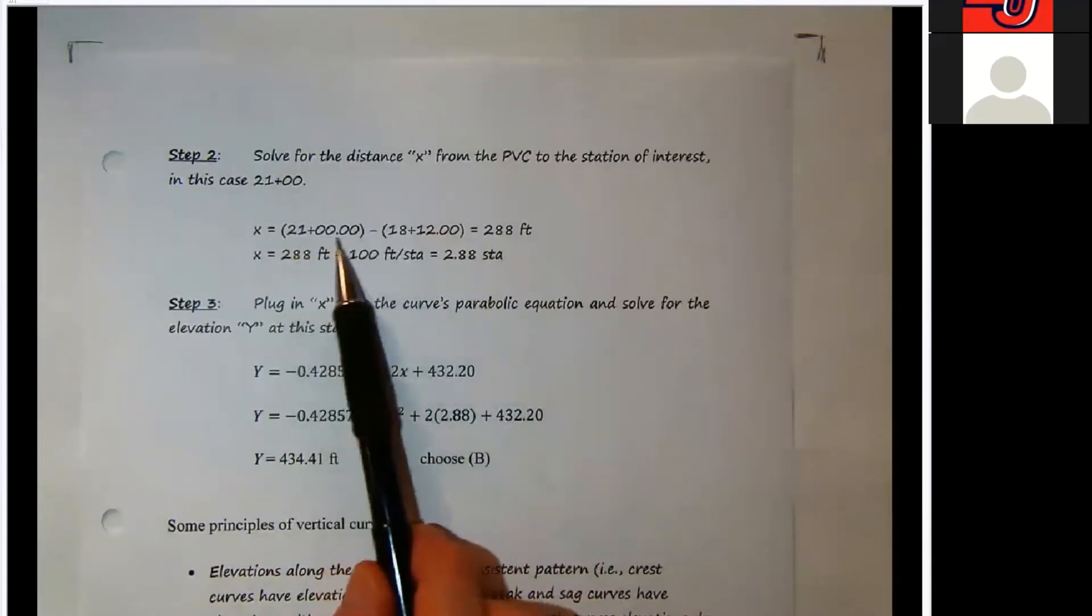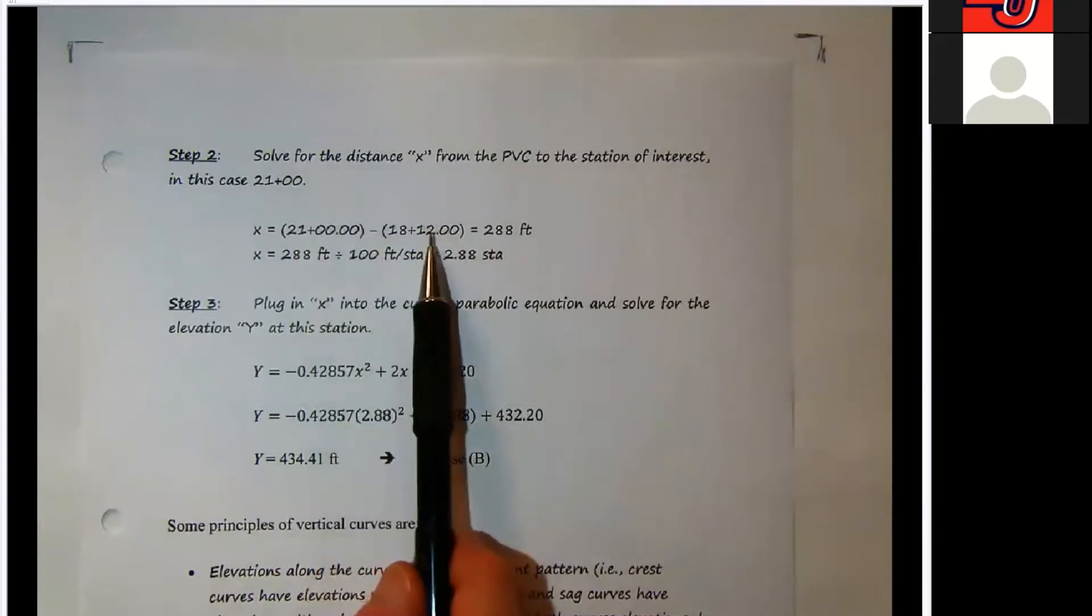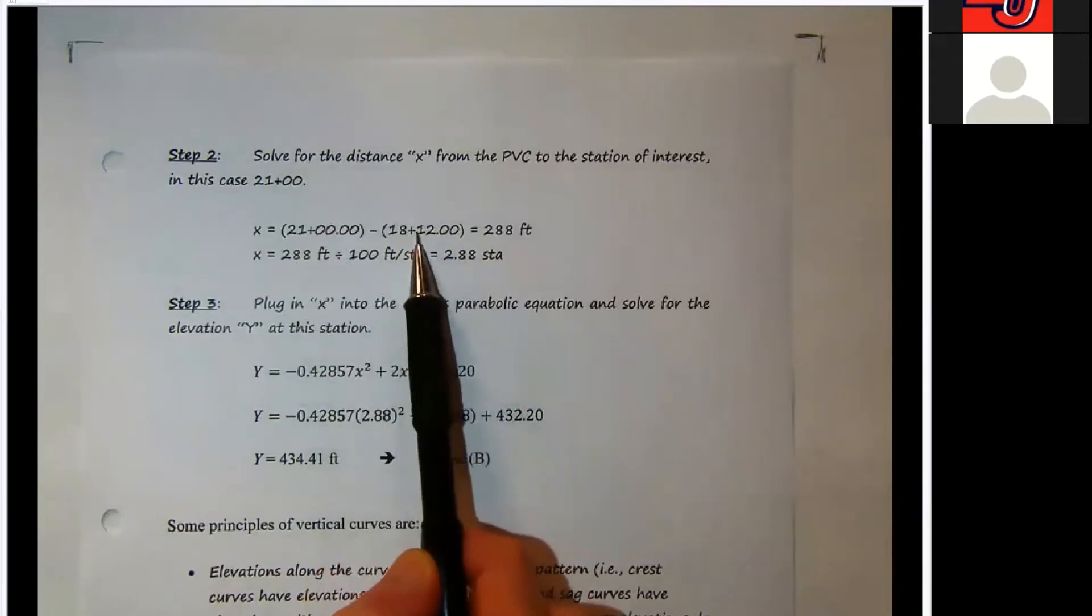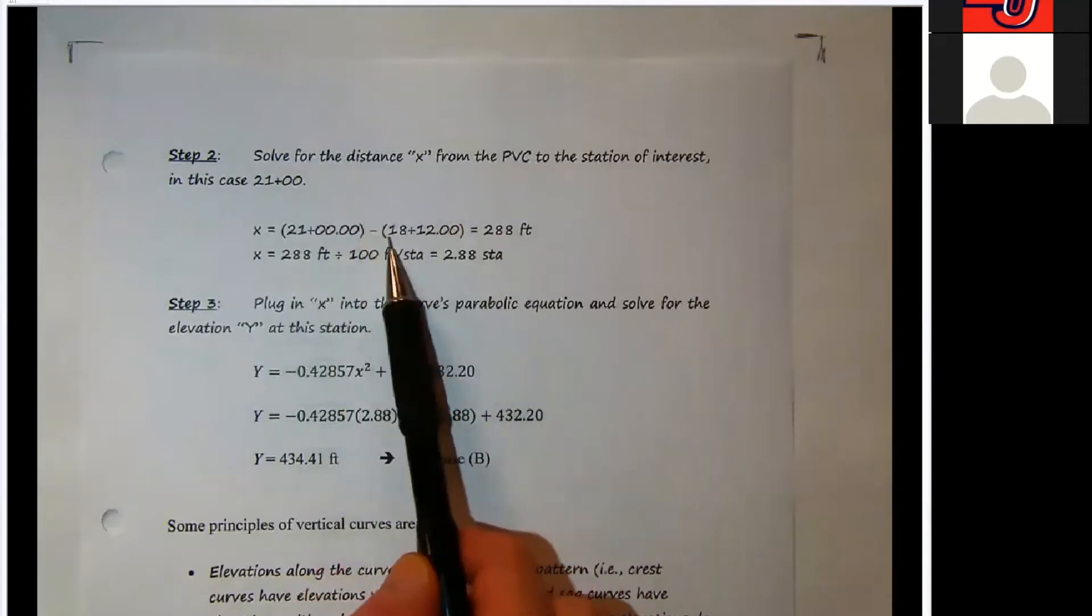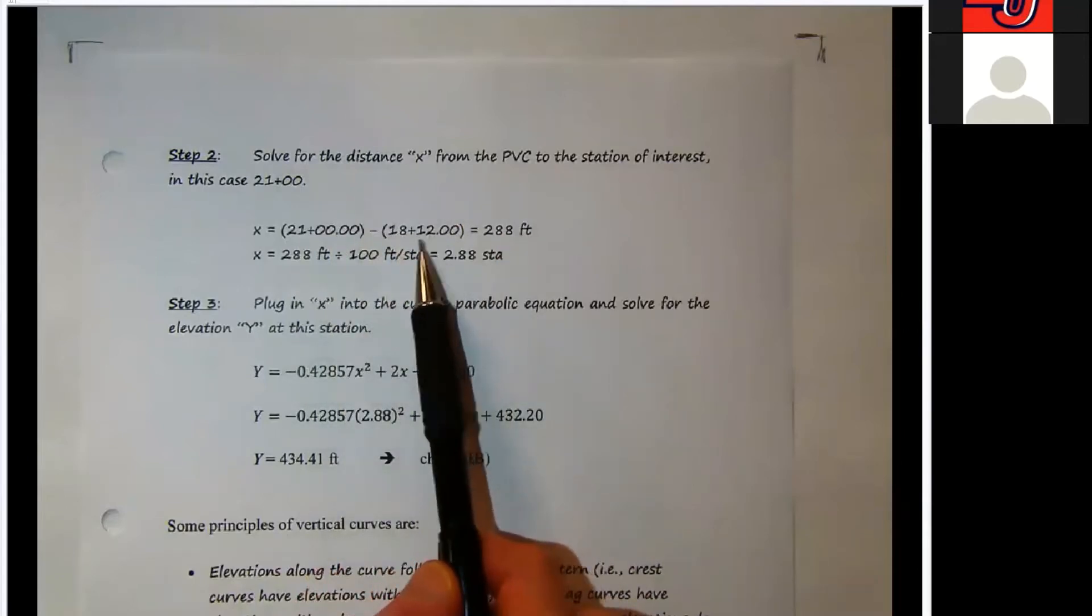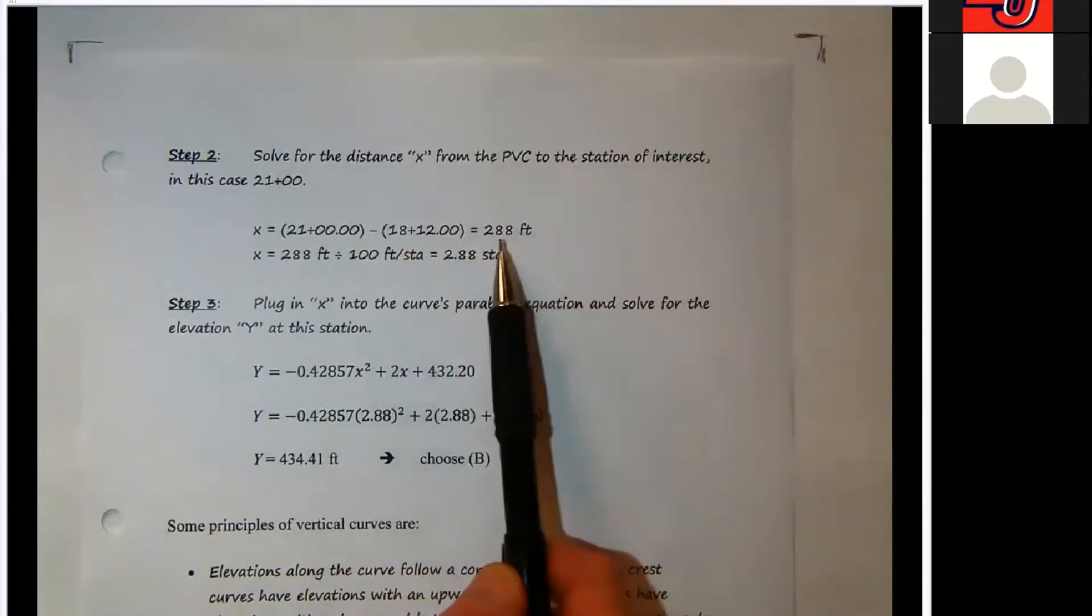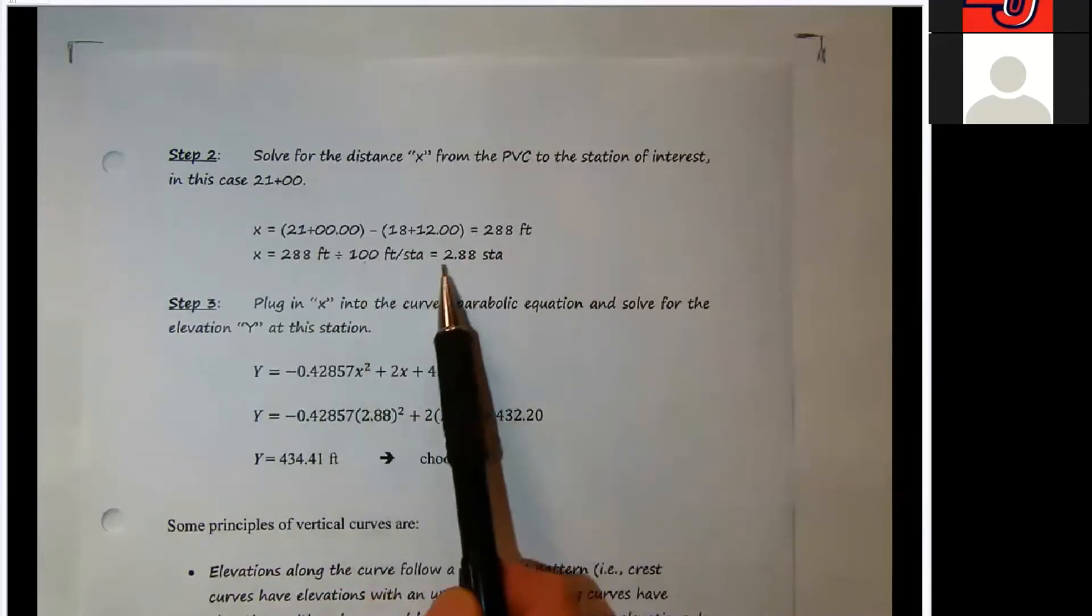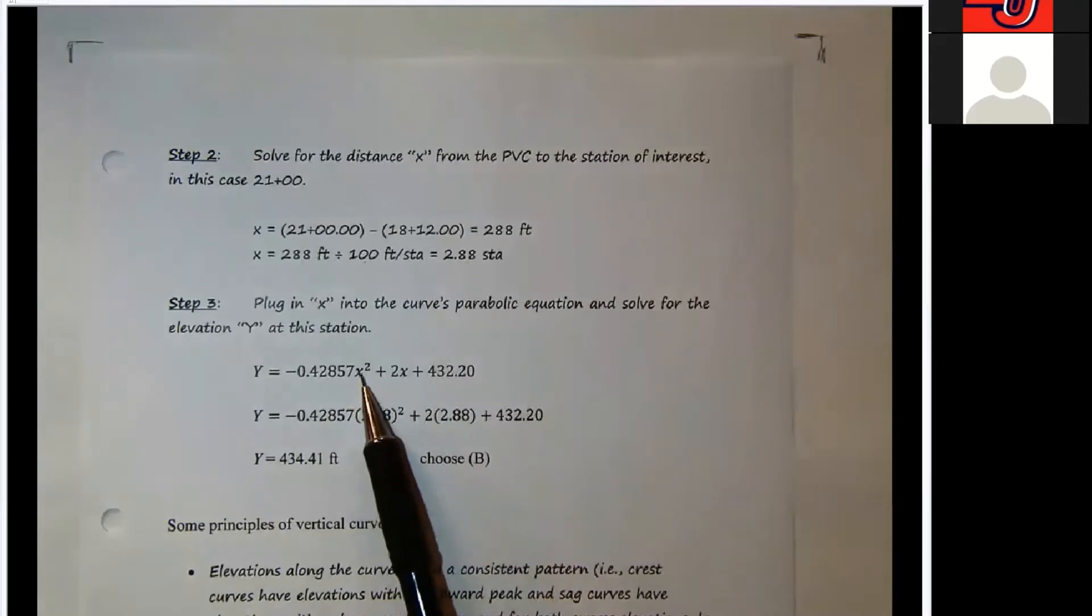This is the typical way to present it. When you are adding and subtracting stations, just drop the plus out of it and just treat this as a number, 2,100 feet minus 1,812 feet. That was the station of the PVC. And that's 288 feet. So take that and divide it by 100 to get it into stations.